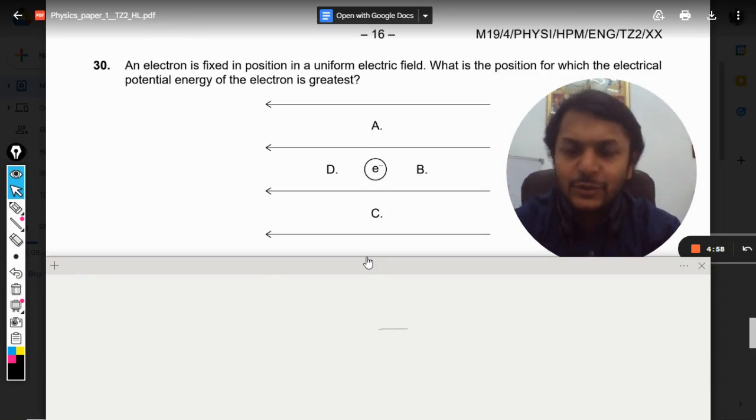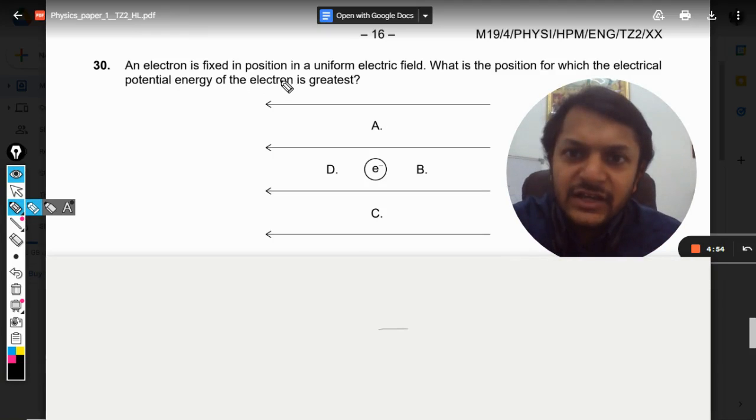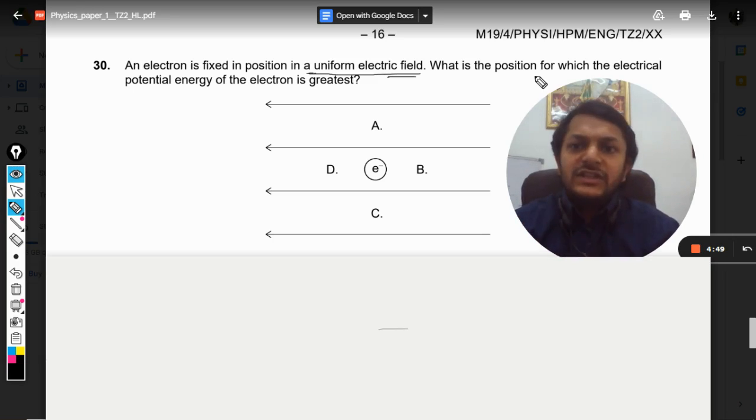Hello dear students, let us see what is there in this question. An electron is fixed in position in a uniform electric field. What is the position for which the electric potential energy of the electron is greatest?